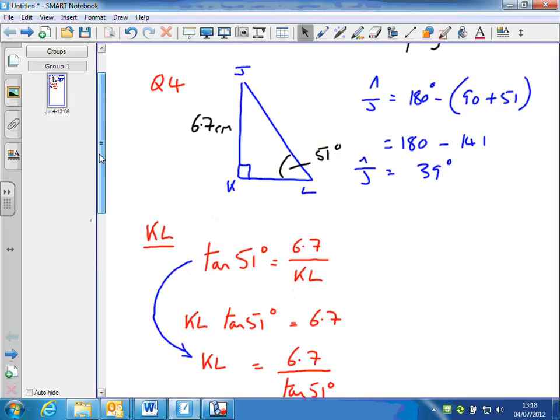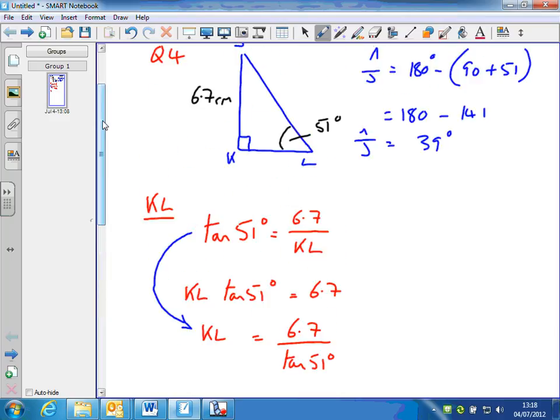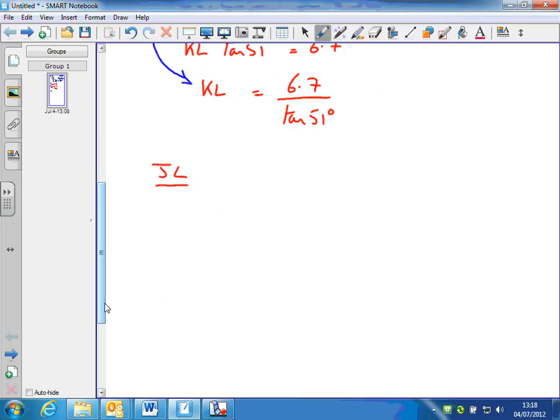Now we're after JL. JL is the hypotenuse and KL is the adjacent. So we want cosine of 51, which is the adjacent, 6.7, over the hypotenuse, JL. Rearranging by multiplying by JL and dividing by cos 51, we get JL equals 6.7 divided by cos 51 degrees.